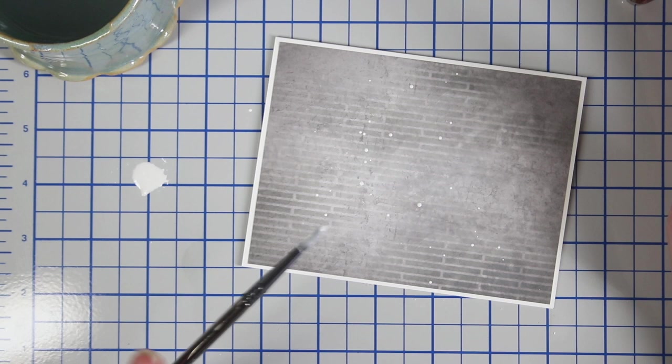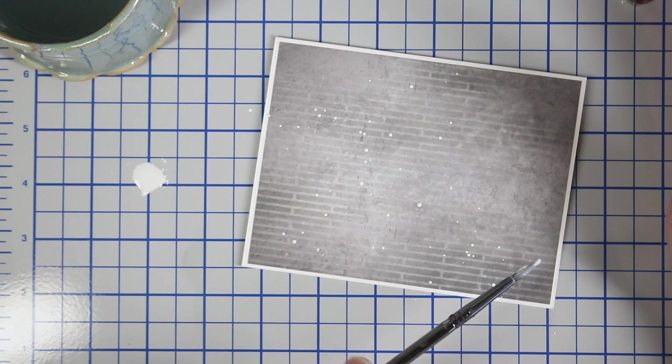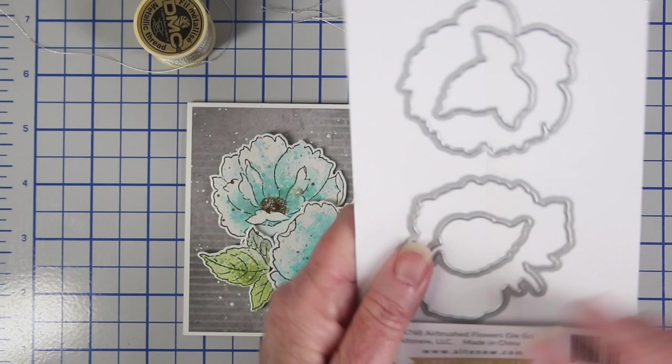And to go with the extra flicking of color I have in my flowers, I'm also flicking on some white gouache. You could also use white pigment paint, and I'll also be using some Perfect Pearls.